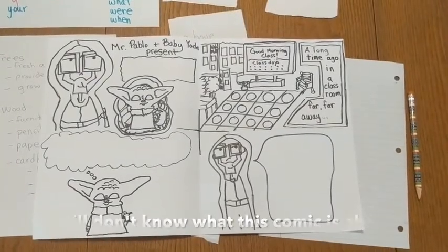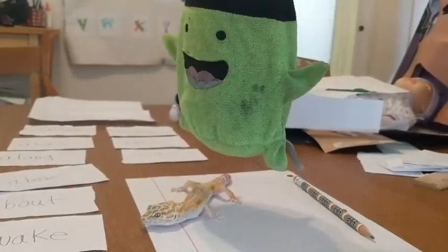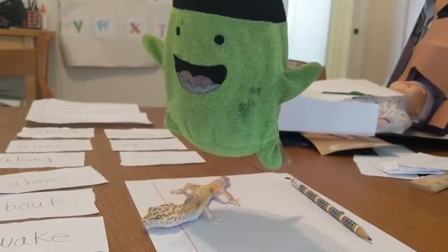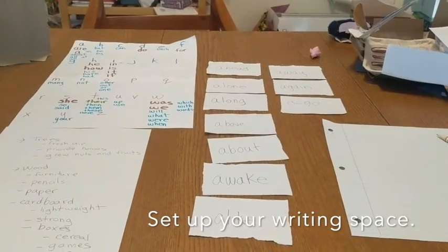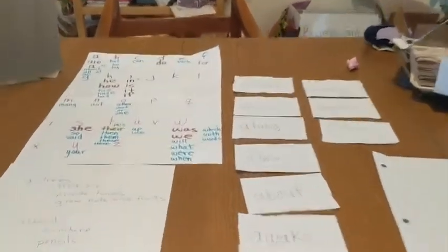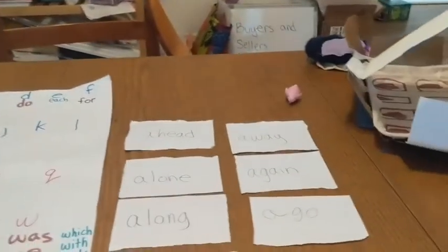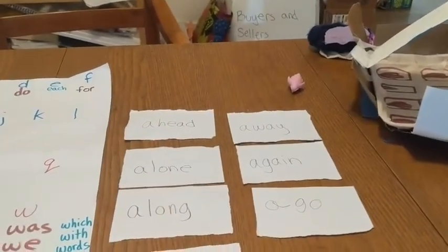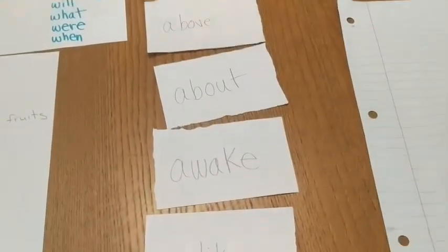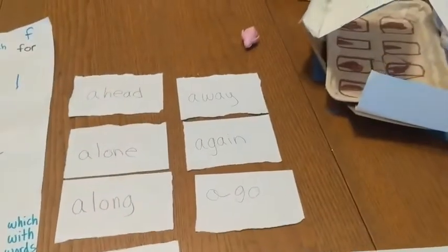I'm setting up my writing space for today, so you can see I have my sight words, I have my vocabulary words: ahead, alone, along, above, about, awake, alike, away, again, and ago.